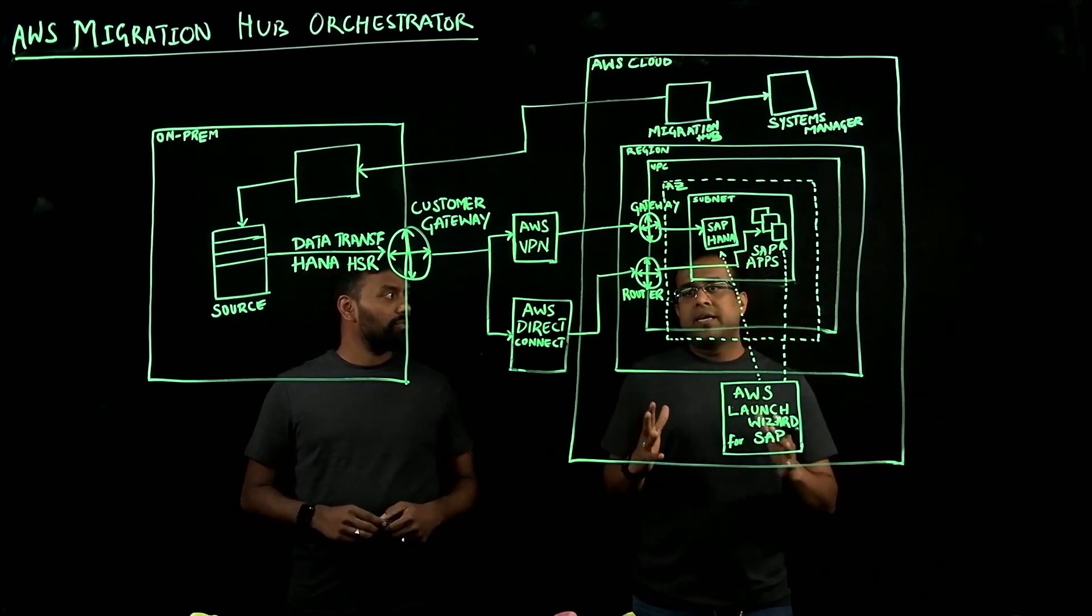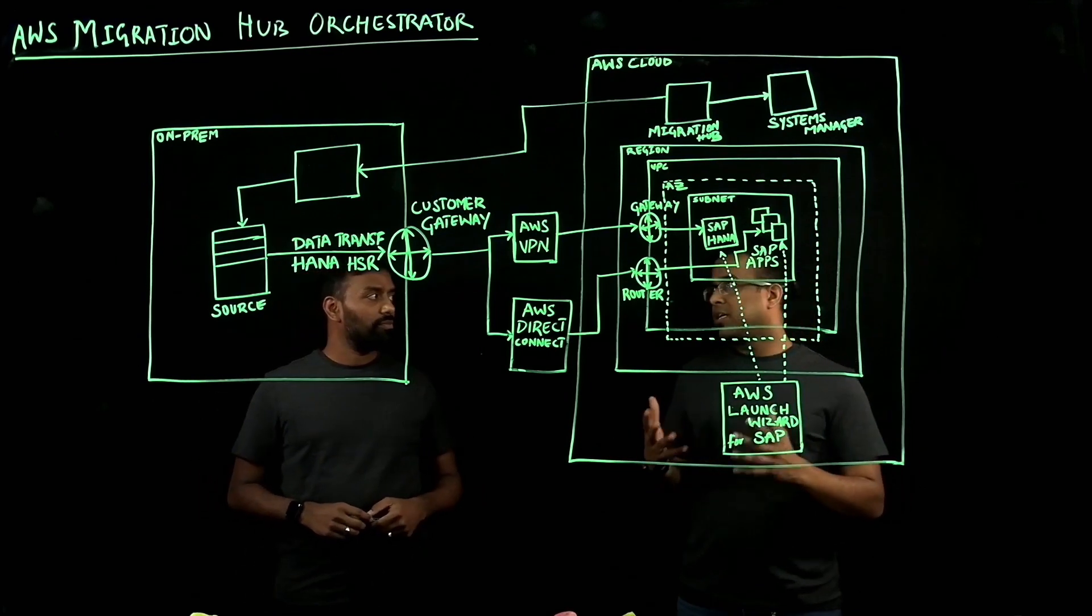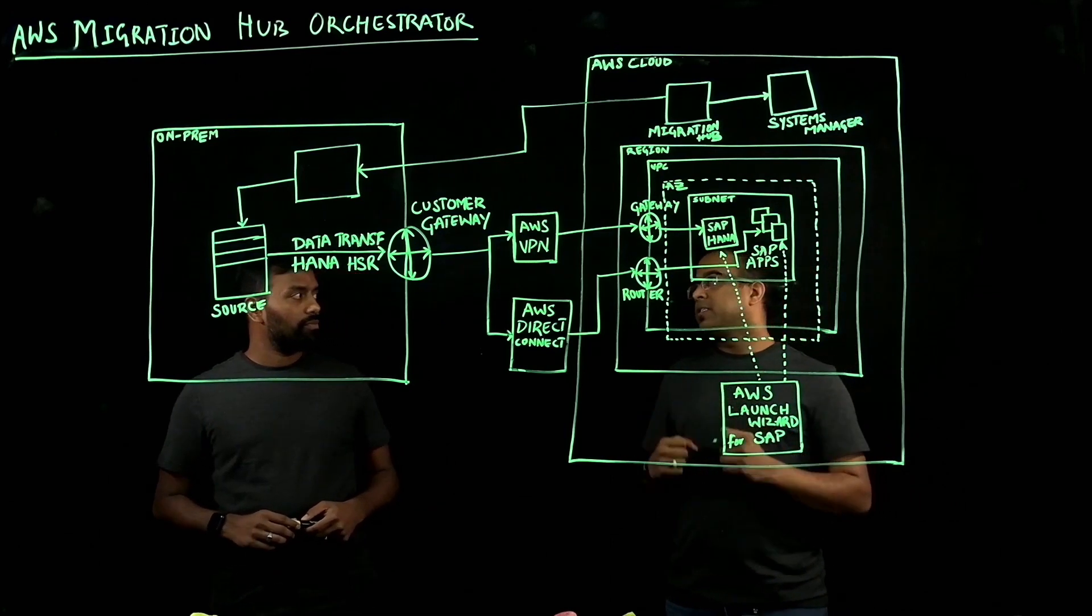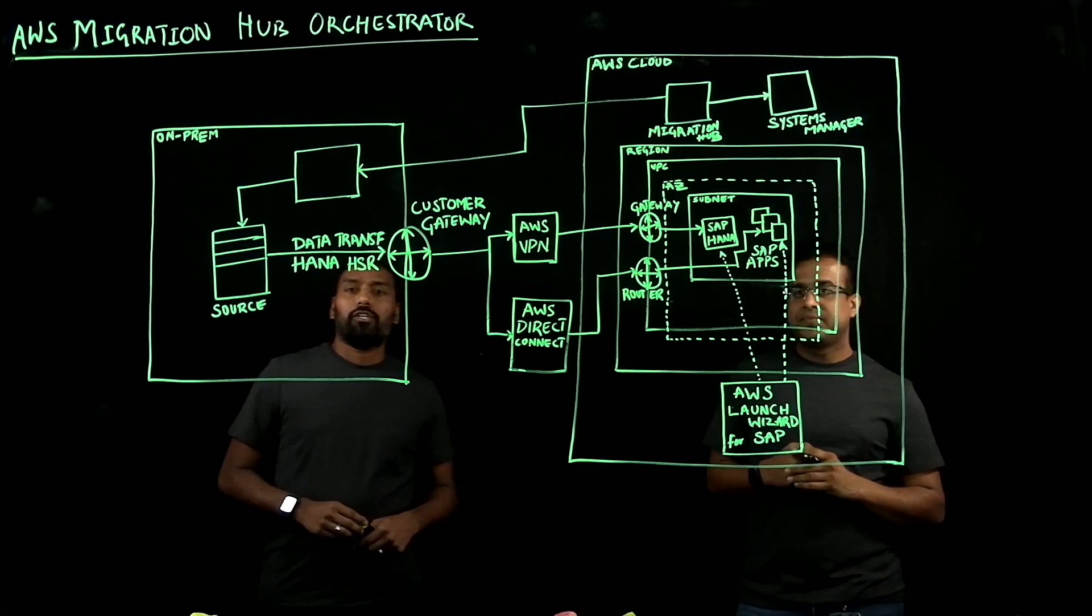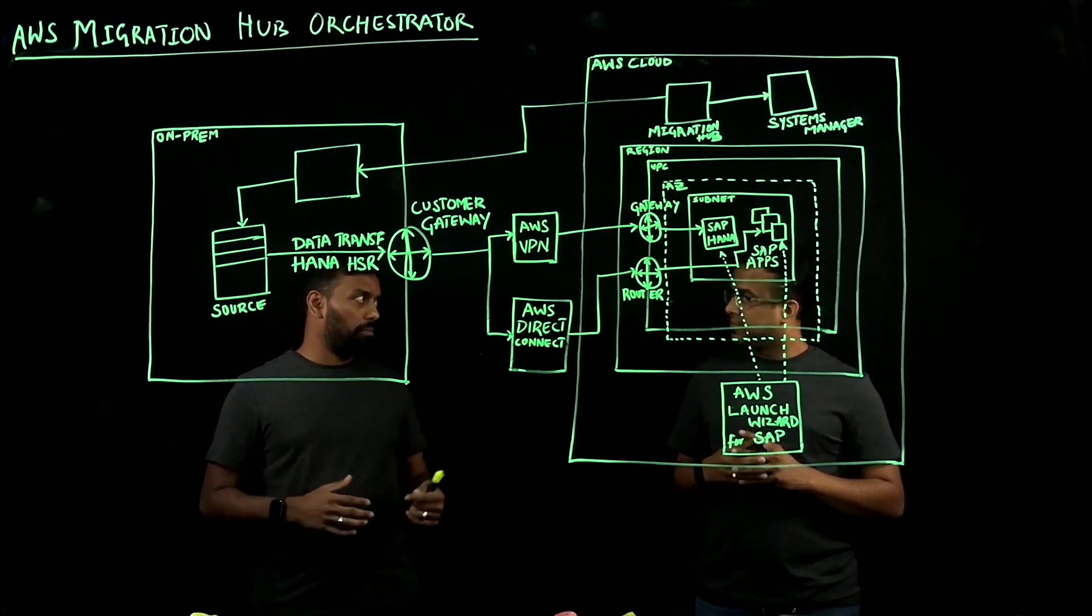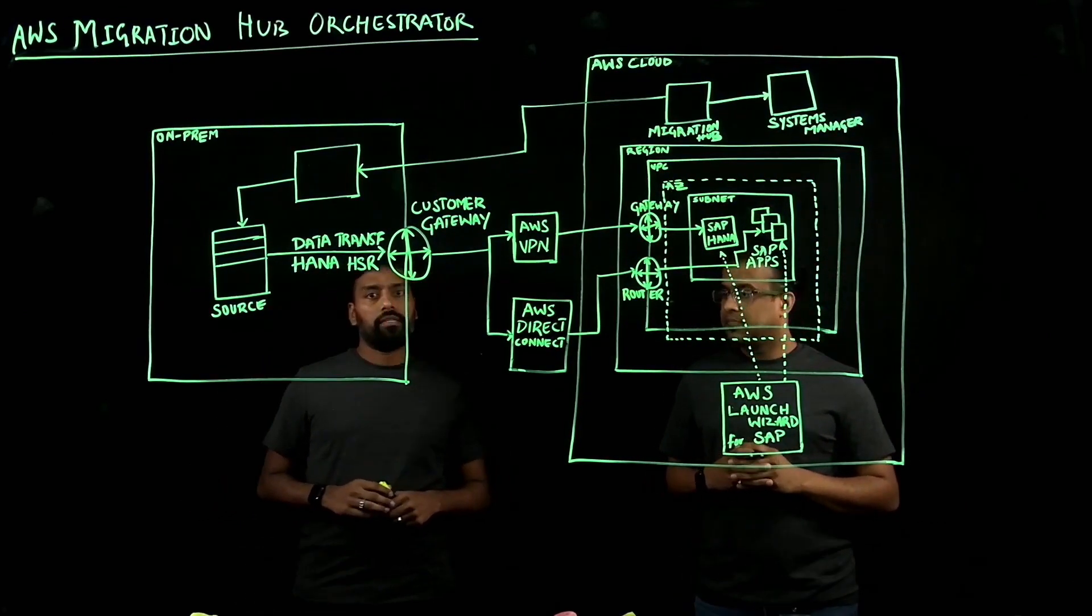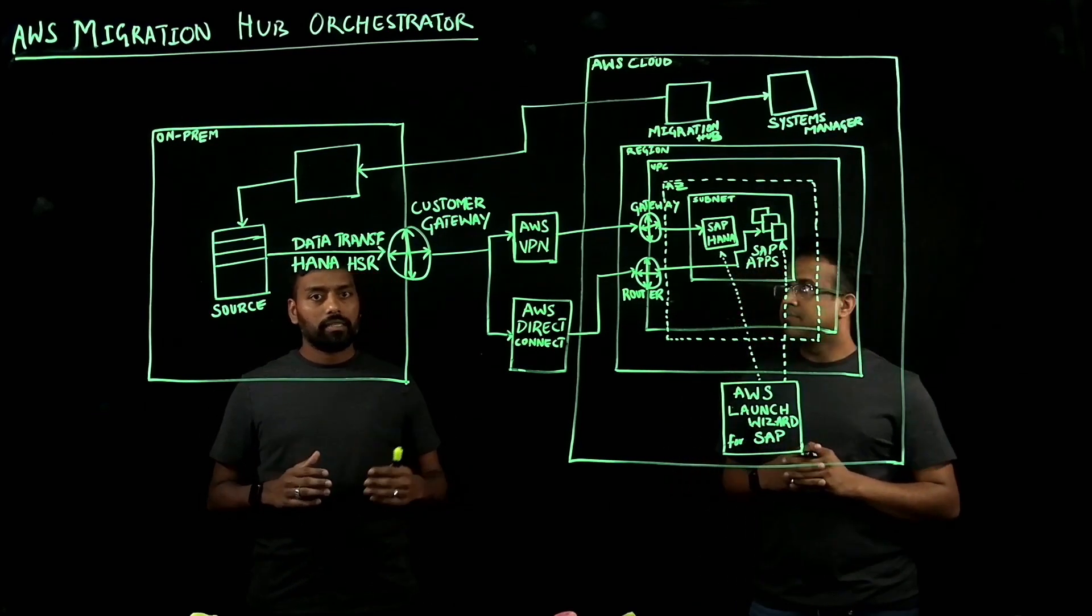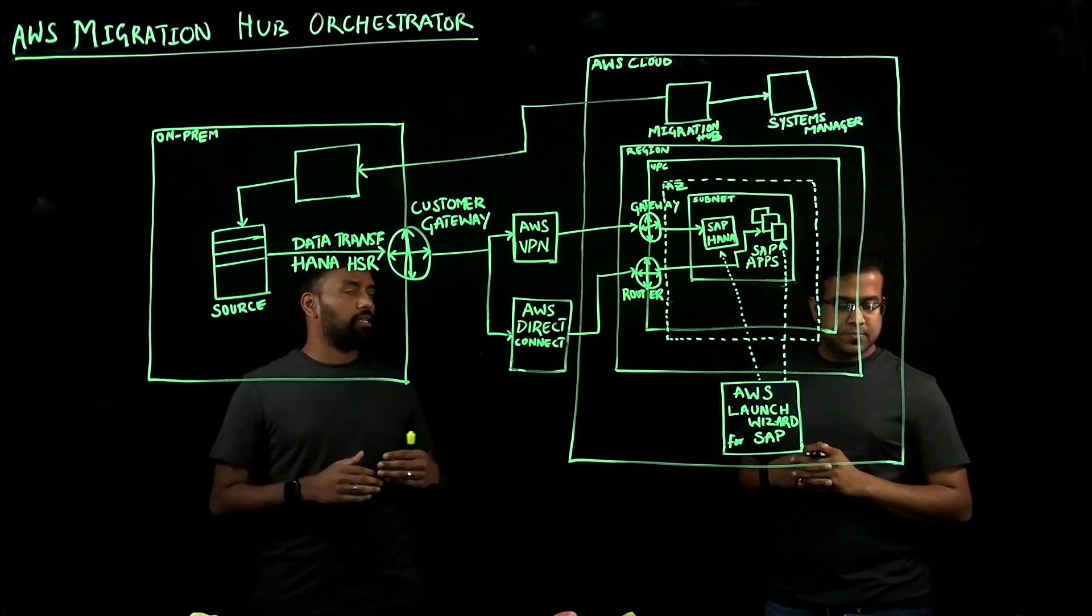We are here excited to talk about AWS Migration Hub Orchestrator. Venkat, we have heard a lot from customers about SAP migration to AWS. Can you give some more details about the new service, AWS Migration Hub Orchestrator? Absolutely. AWS Migration Hub Orchestrator is a new feature within our service AWS Migration Hub. Essentially, Migration Hub Orchestrator helps our customers and partners to accelerate and simplify migrations by automating the migration activities that are involved in the application migration process to AWS.